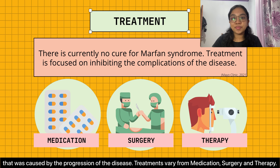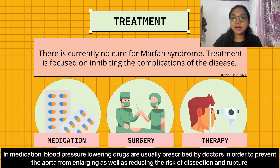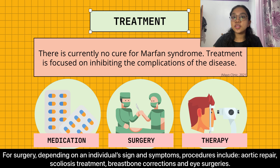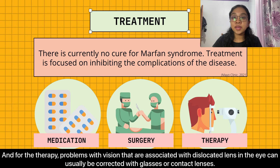Treatments vary from medication, surgery, and therapy. In medication, blood pressure-lowering drugs are usually prescribed by doctors in order to prevent the aorta from enlarging as well as reducing the risk of dissection and rupture. For surgery, depending on the individual's signs and symptoms, procedures include aortic repair, scoliosis treatment, breastbone corrections, and eye surgeries. For eye therapy, problems with vision associated with dislocated lens in the eye can usually be corrected with glasses or contact lenses.